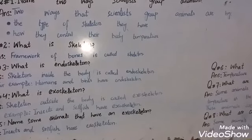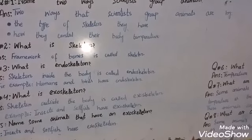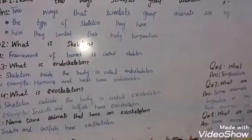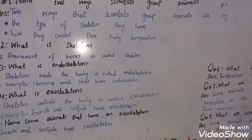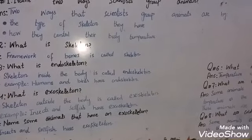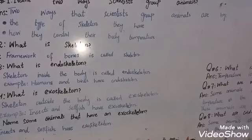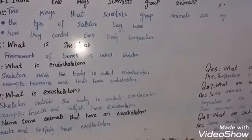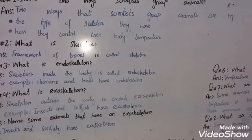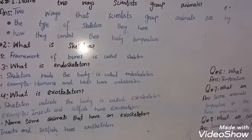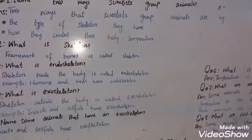Question number four: what is an exoskeleton? A skeleton outside the body is called an exoskeleton. For example, insects and shellfish have an exoskeleton. Question number five: name some animals that have an exoskeleton. Insects and shellfish have an exoskeleton.